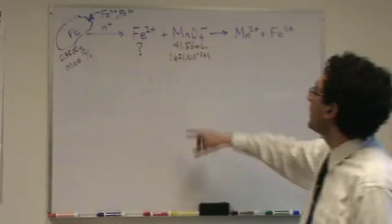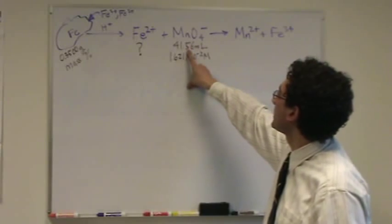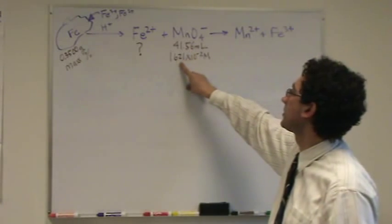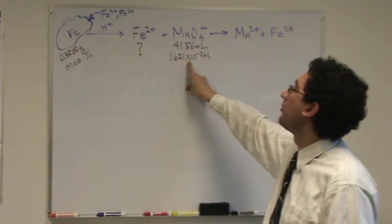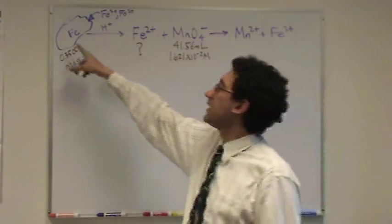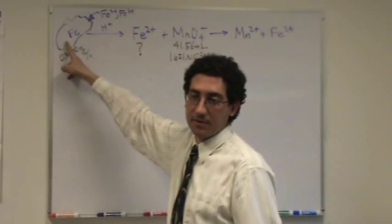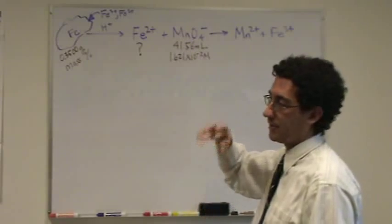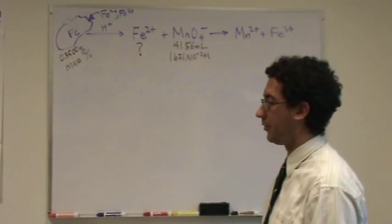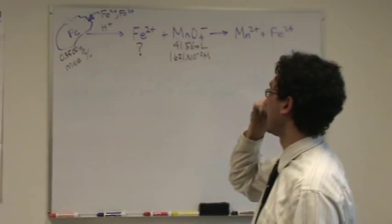It also said you start with 41.56 milliliters and 1.621 times 10 to the minus 2 molar. So, what it wants to know is the mass percent of iron in this ore. In the rock. It's a rock. It's iron oxides in that rock. It's a very typical ore.